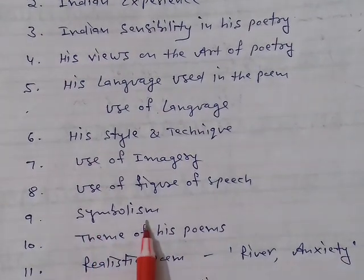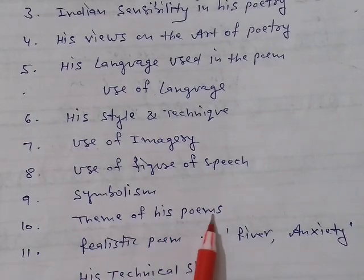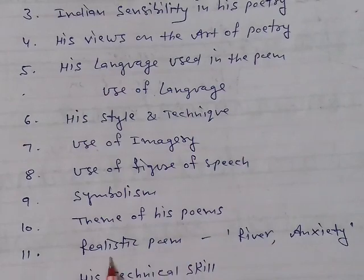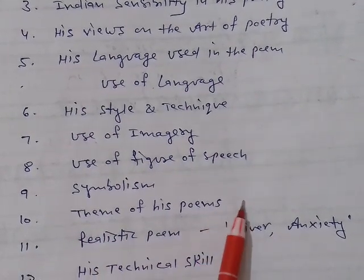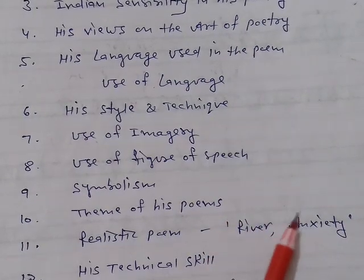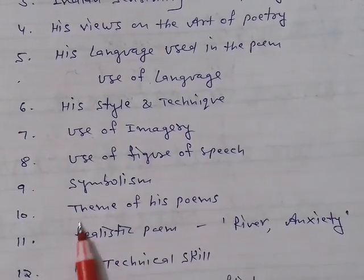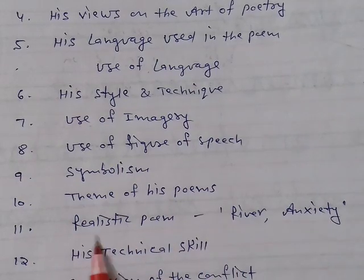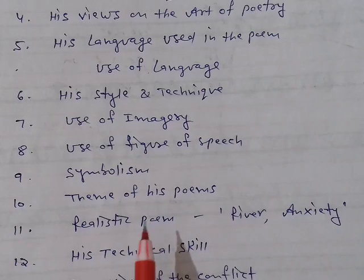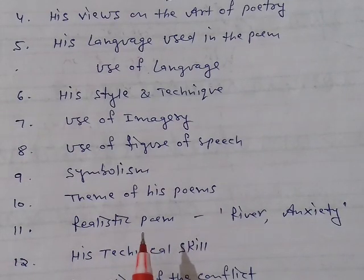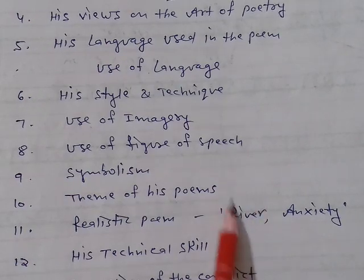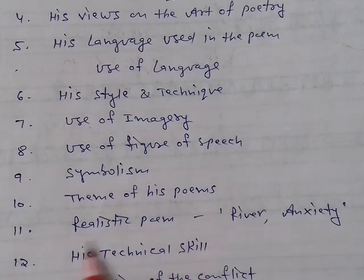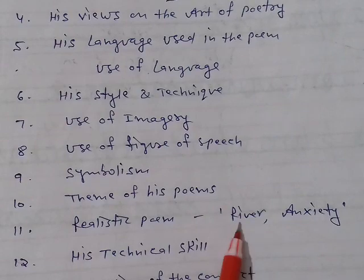The next heading is theme. The theme of A.K. Ramanujan's poems is very realistic — social issues and very modern themes. He has used realistic themes, so his poems are very realistic. Just look at the theme of 'A River' — it is very realistic, and so is 'An Anxiety.' A.K. Ramanujan does not prefer imaginary or unrealistic themes. He always looks around him at what is going on in society or in the psyche of human beings, and then he composes. The best examples are 'A River' and 'An Anxiety.'